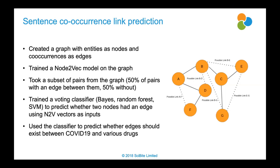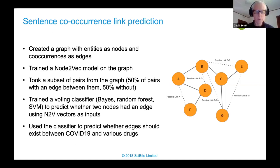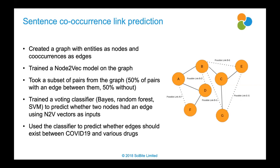Node2Vec works similarly to Word2Vec. In Word2Vec, you start with a sentence, run it through the algorithm, and words that commonly occur in the same context will have similar positions in the vector space. With graphs, you don't have sentences, but you can generate random walks through the graph starting from each individual node, and use those as your sentences.